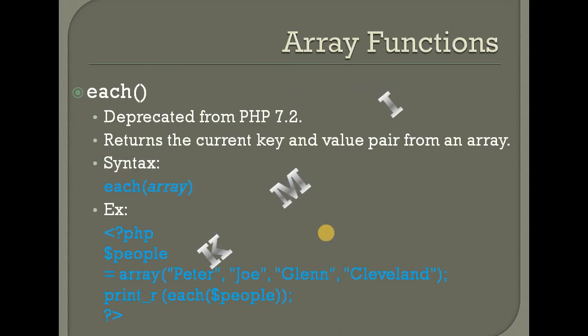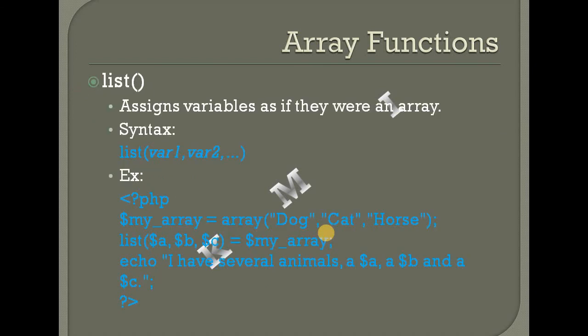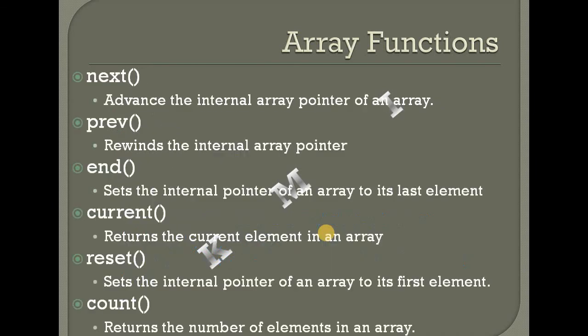Then each — PHP 7.2 — in_array returns the current key and value pair from an array. Select current key-value pair. Then list — assign variables as if they were an array. Then next — advance the internal array pointer. End — set pointer to last element. Reset — reset the array pointer.